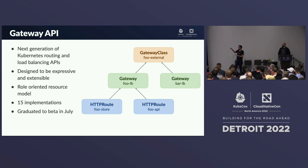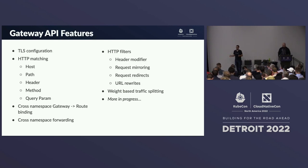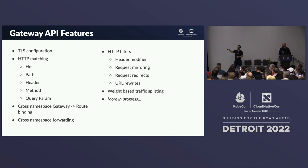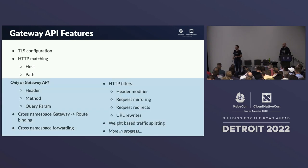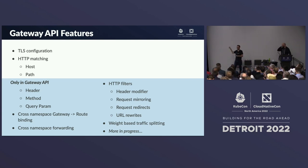Gateway API has a ton of features. We've had lots of feature requests throughout Kubernetes networking — request redirects, rewrites, header matching, method matching — many things we've had requests for a long time. Gateway API finally allows you to do many of these things. Some things you can do with the Ingress API today, but everything in that blue box is entirely new with Gateway API.